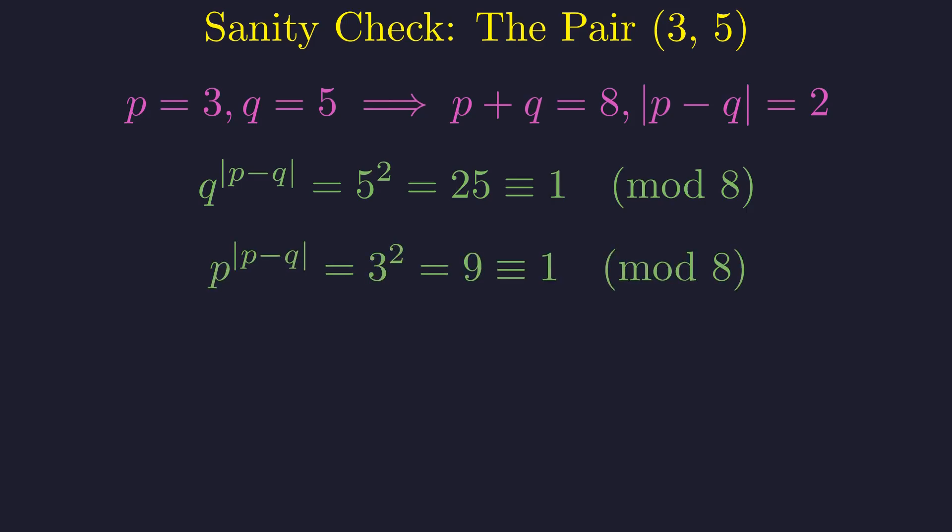And the second condition. Is 3 squared congruent to 1 modulo 8? 9 is 1 times 8 plus 1. Yes. This also holds. So, 3, 5 is a solution.